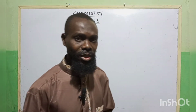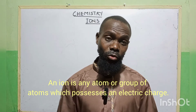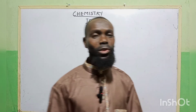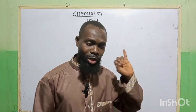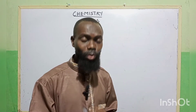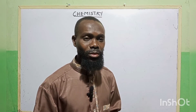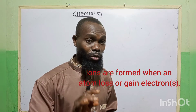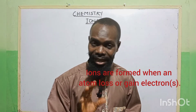Now what is an ion? An ion is any atom or group of atoms which possesses an electric charge. If we recall in our previous class, we discussed about elements when we talked about the monoatomic elements, diatomic elements, and polyatomic elements. There are some molecules that possess electric charges. Ions are formed when an atom loses or gains an electron or electrons.